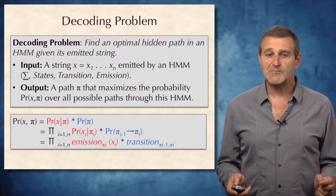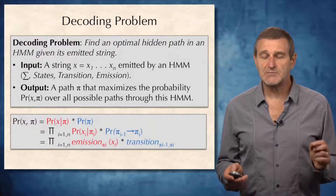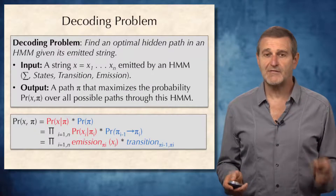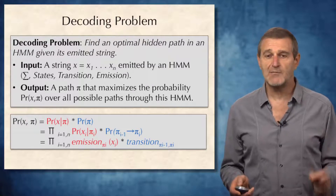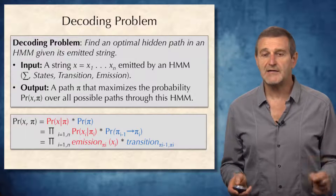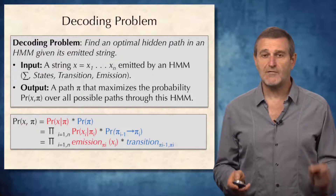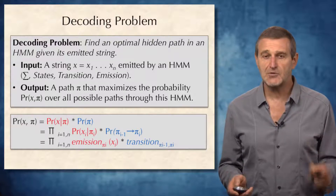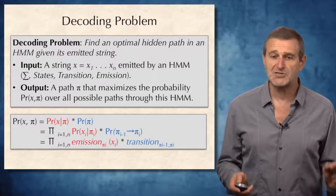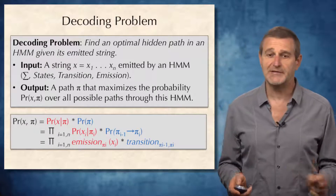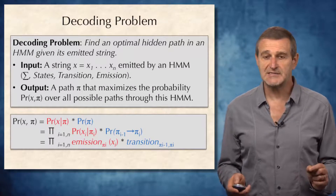The path pi maximizes the probability of x and pi. The probability of x and pi, as we saw, equals the product of probability of x given pi multiplied by probability of pi. It is a product of N terms, each term being the product of emission probability and transition probability, as described on this slide.